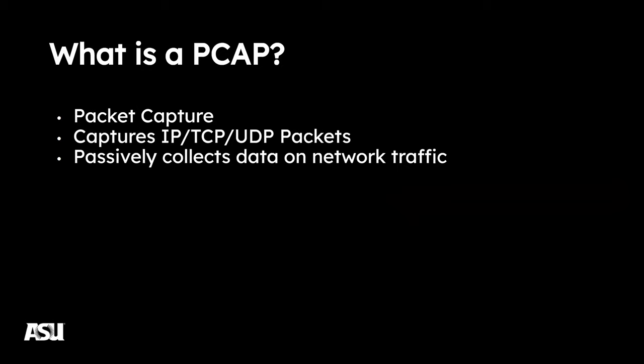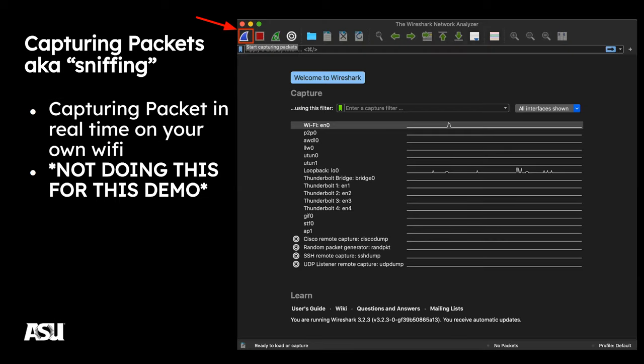A pcap file — short for packet capture — is basically a file containing the TCP, UDP, and IP packets that have been captured from a network. So if you run Wireshark to capture packets, what you'll get when you're done is a pcap file.